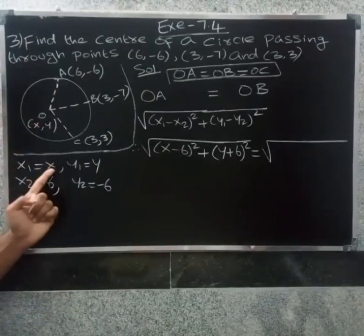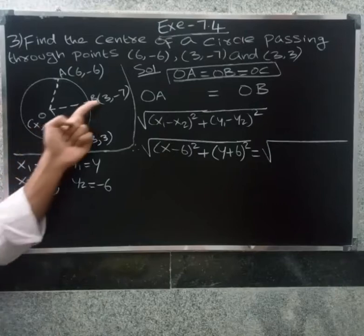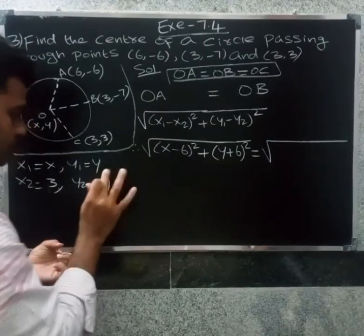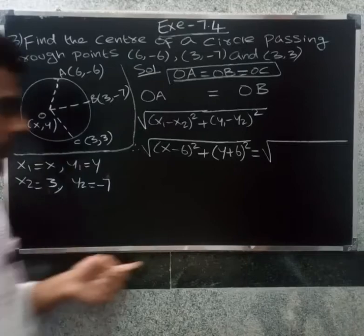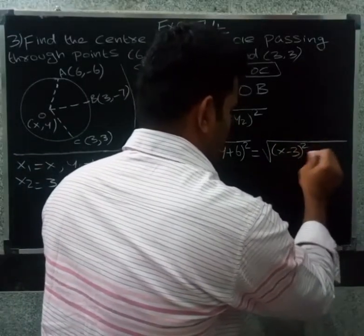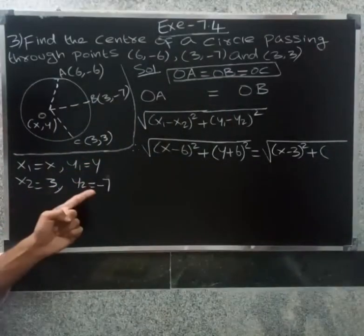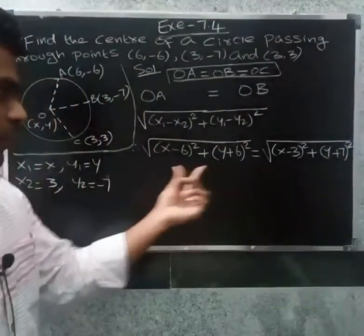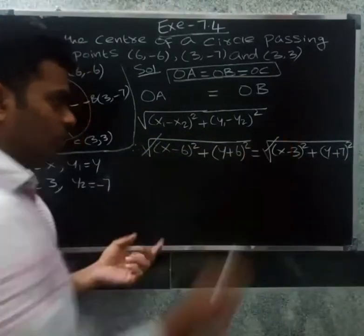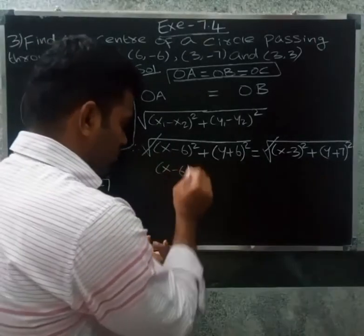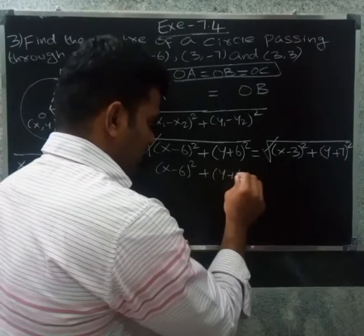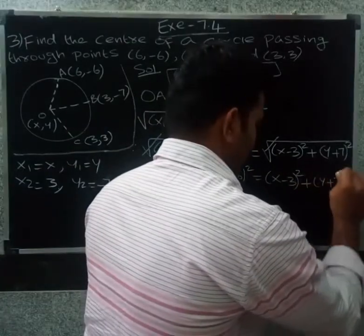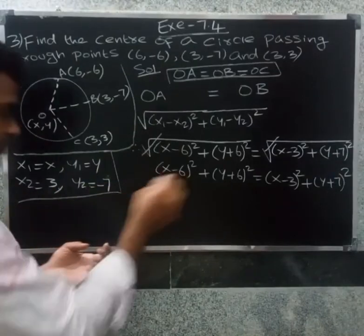Now for OB, point B is (3, -7), so x2 equal to 3, y2 equal to minus seven. So OB equals root of (x minus 3) whole square plus (y minus minus seven), which gives (y plus seven) whole square.